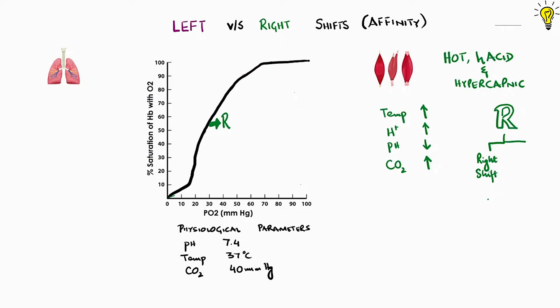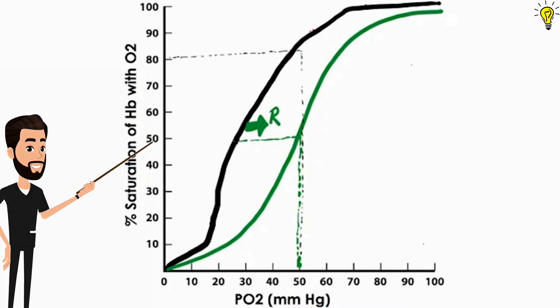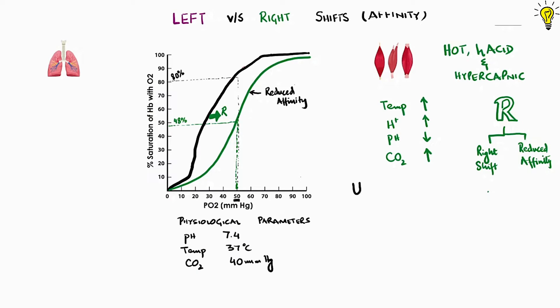So remember R for right, R for reduced affinity. So in normal black graph you can see, hemoglobin was 80% saturated at 50 mmHg oxygen pressures. But in right shift green graph, the same 50 mmHg oxygen pressure would cause only 48% saturation of hemoglobin, marked in green for ease. This reduced affinity of oxygen helps in offloading of oxygen by hemoglobin in tissues. In conjunction with CO2 rising, this is called the Bohr effect.